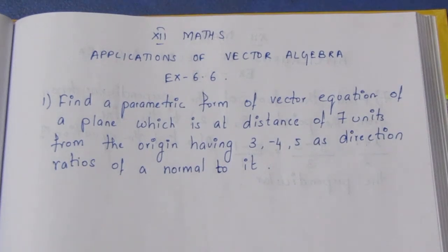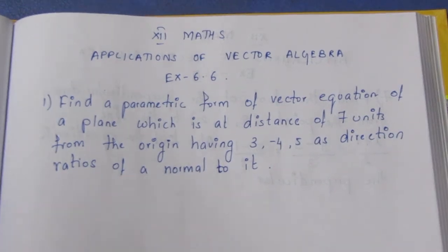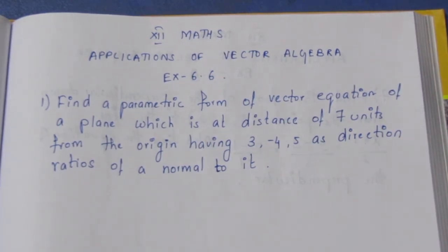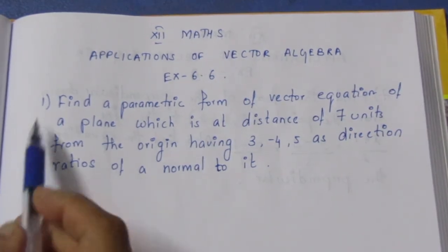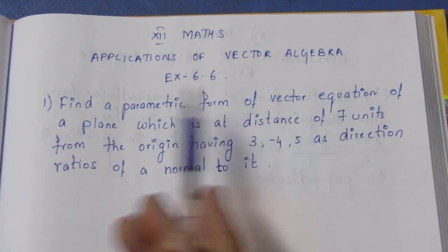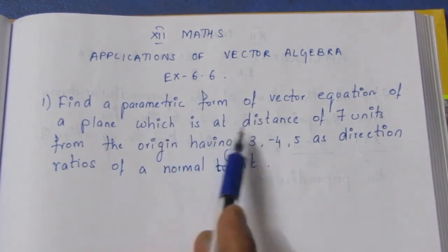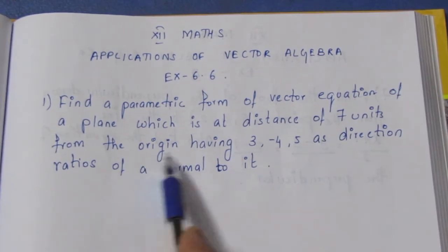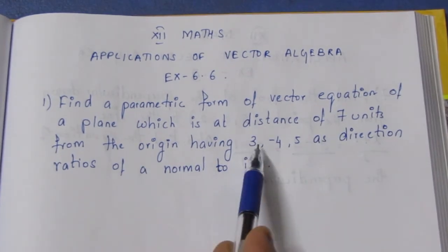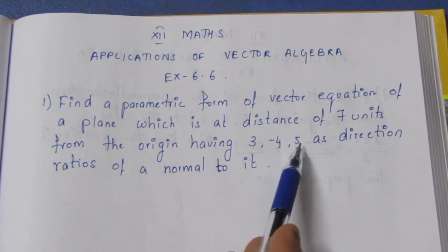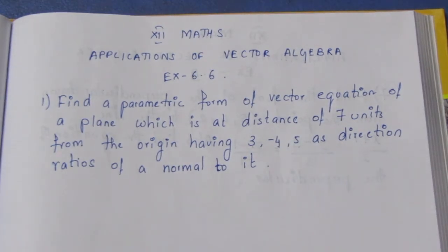Hello viewers, I am Aikli. In 12th standard math, applications of vector algebra, Exercise 6.6. First sum in the video — question: Find a parametric form of a vector equation of a plane which is at a distance of 7 units from the origin having 3, 4, 5 as direction ratios.